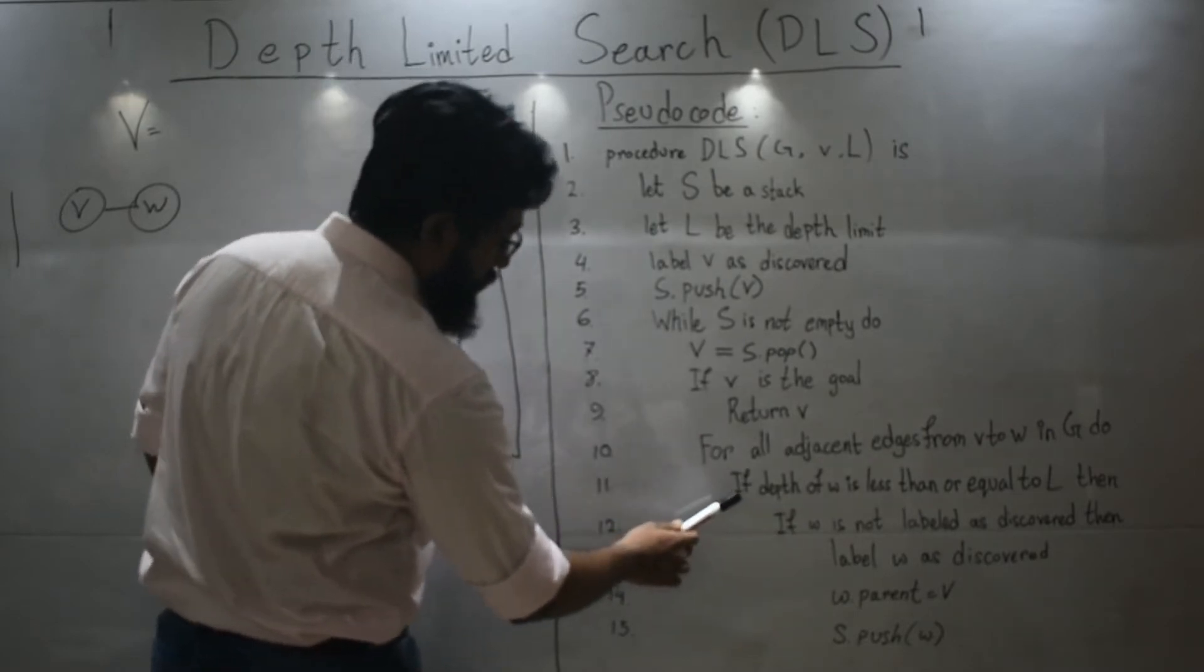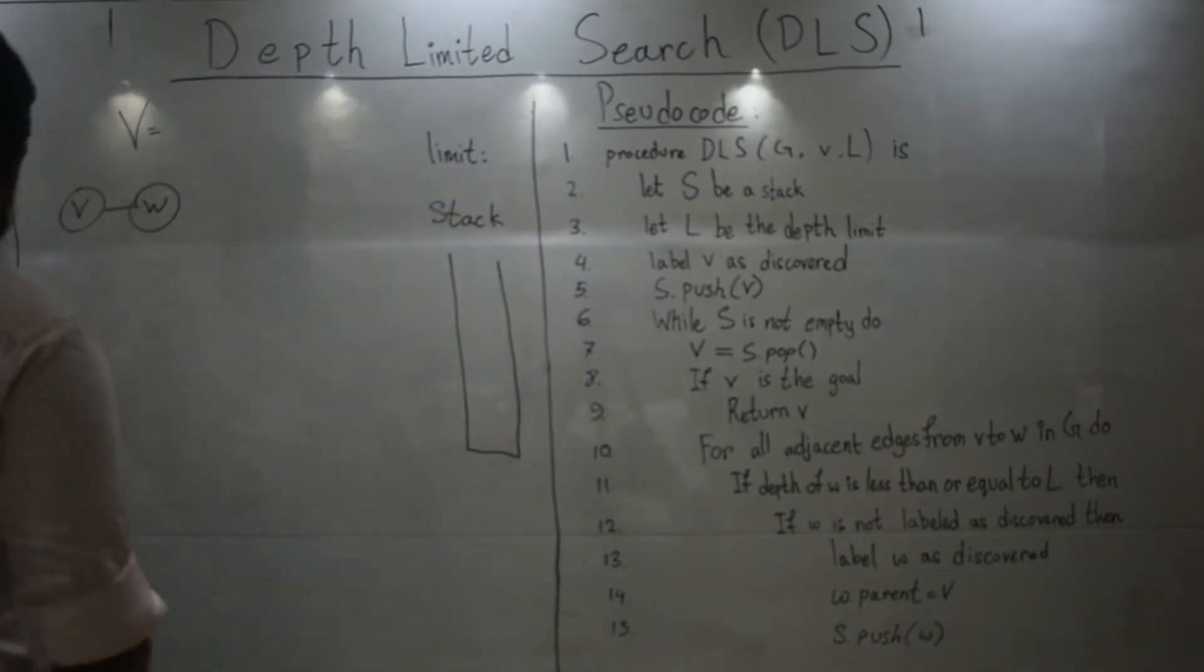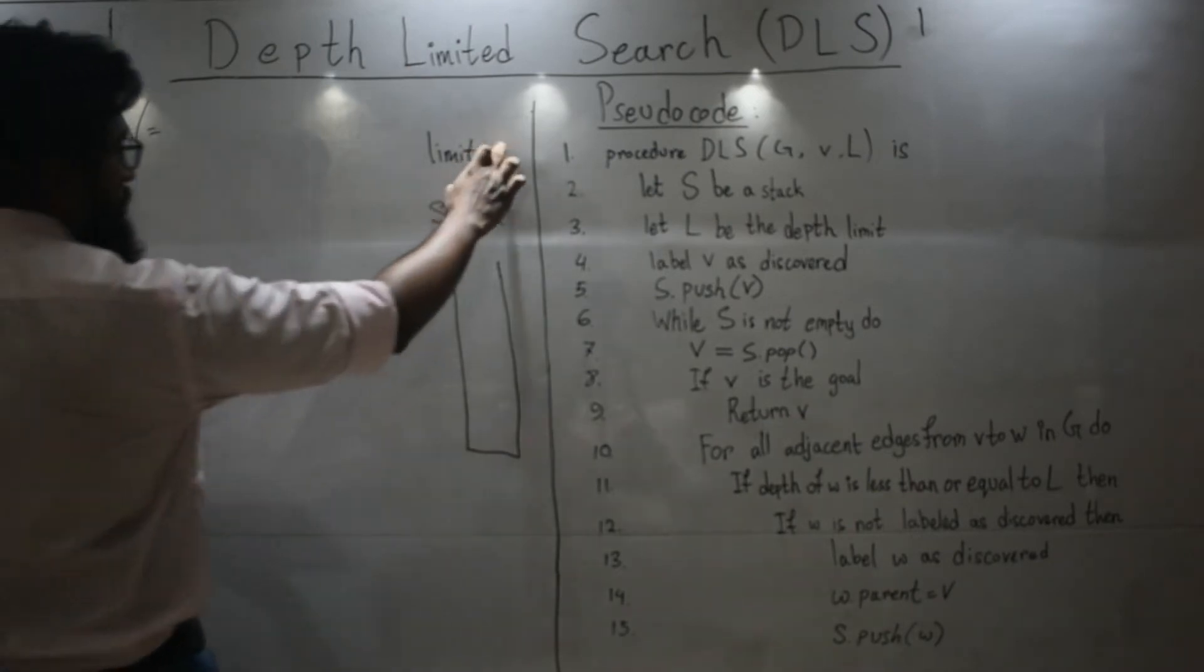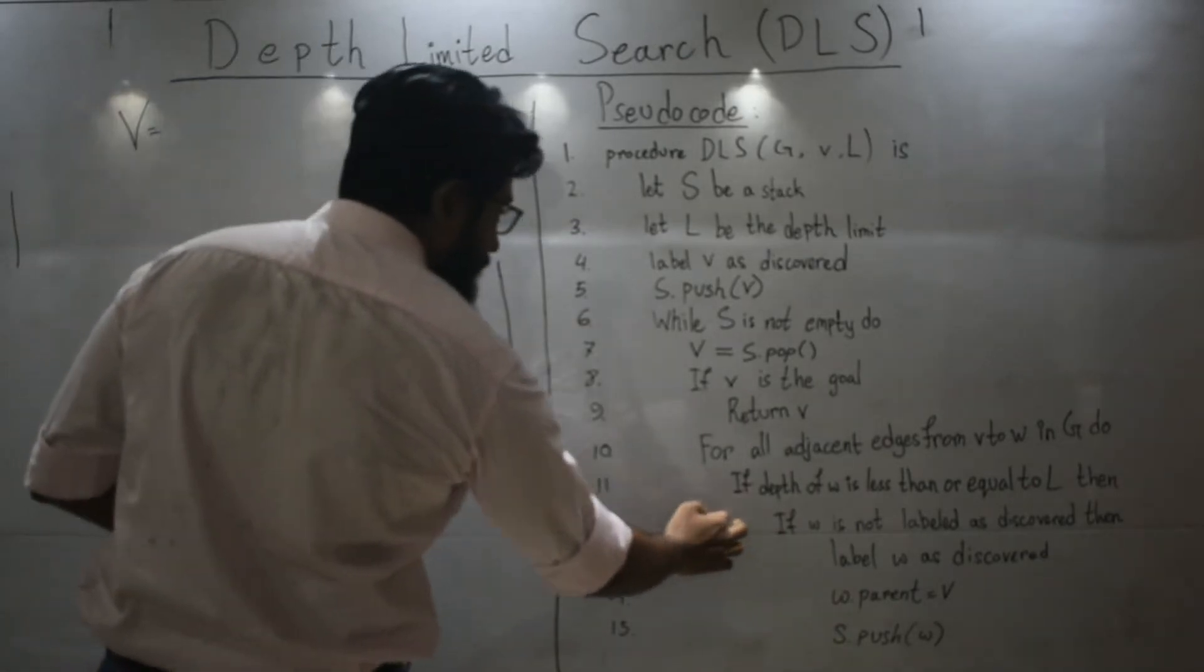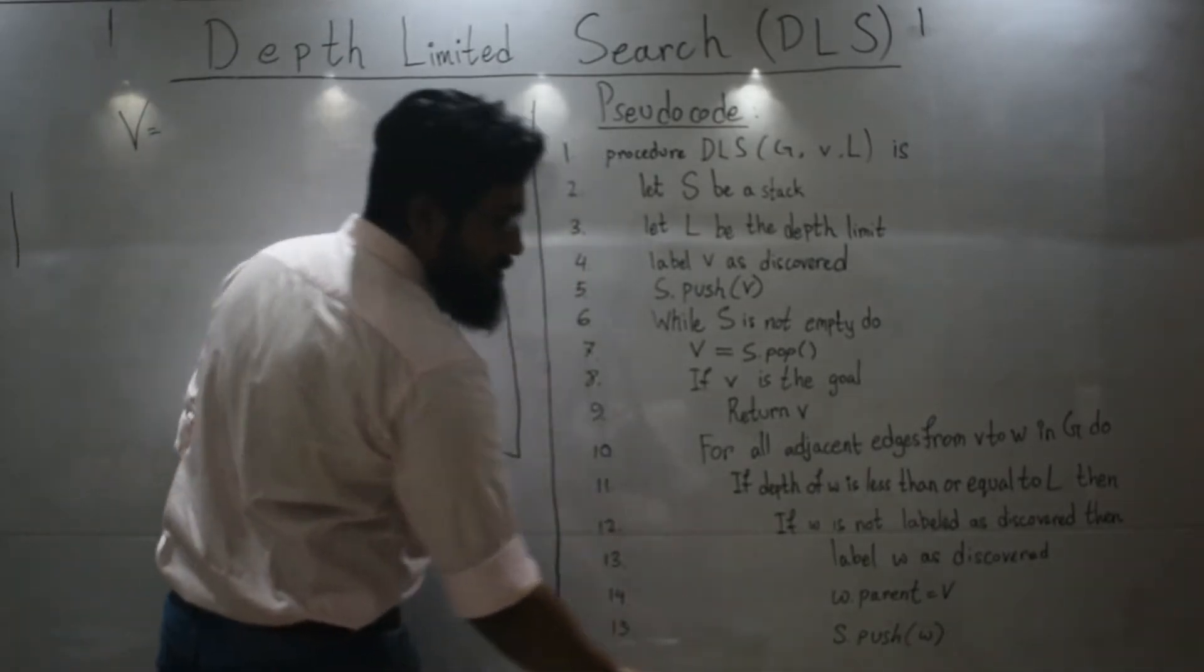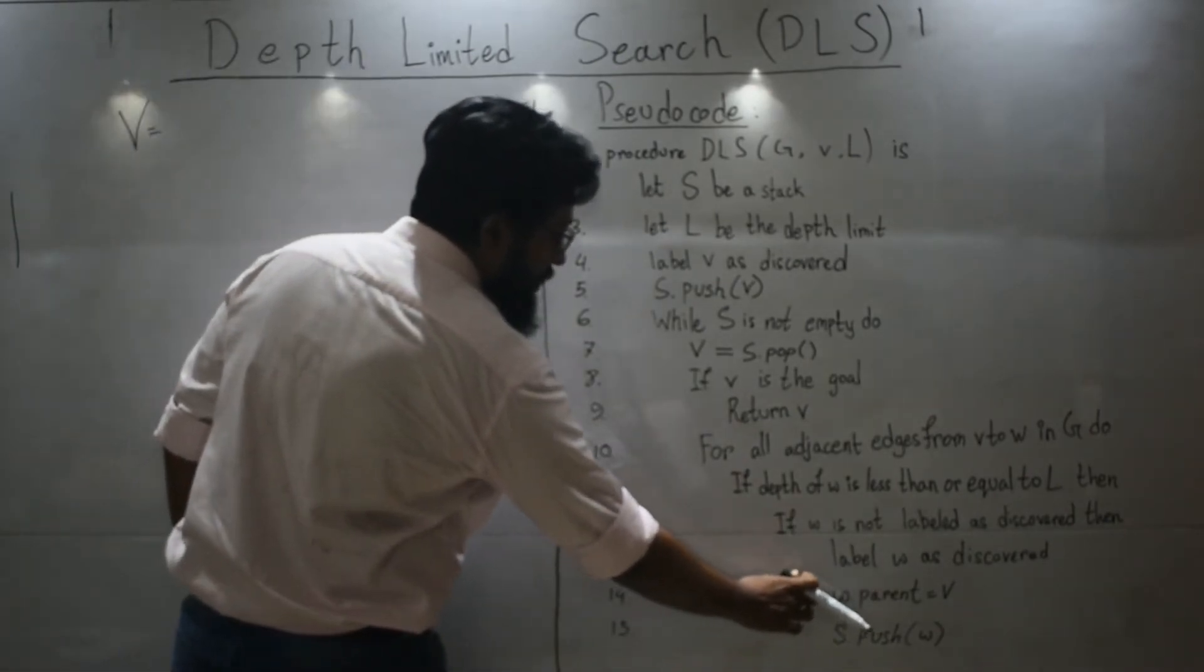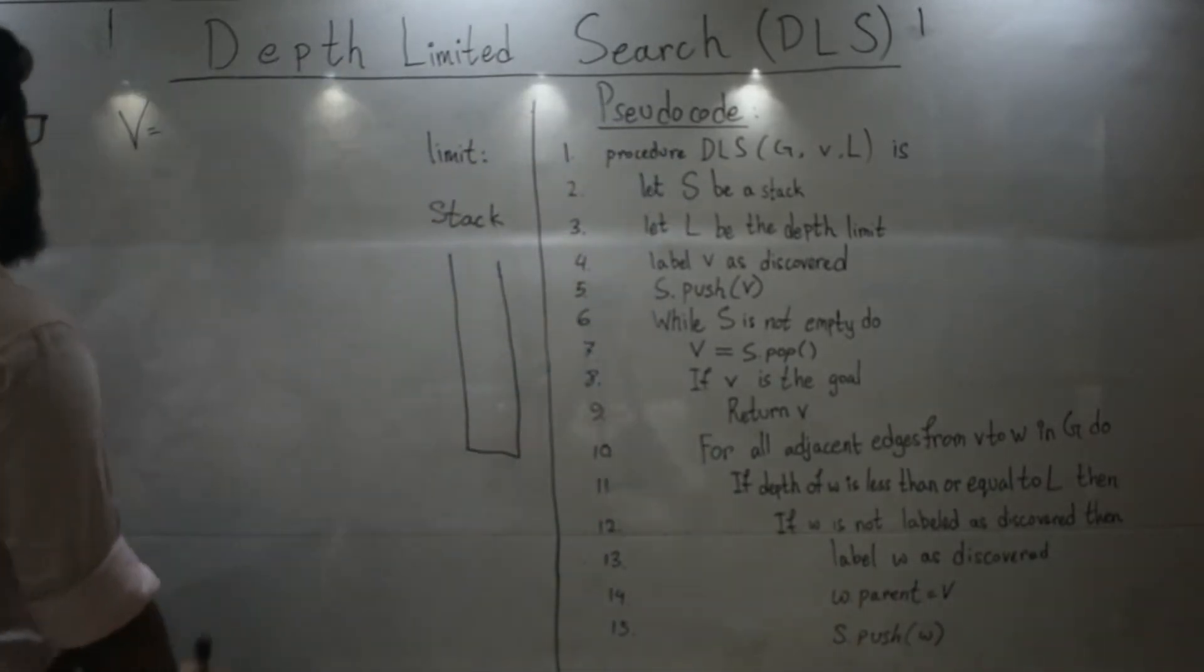So, let's check what we have to look for. Is the depth of W less than or equal to the limit? So, we will check the limit and check the level of W. Followed by, is it discovered or not? If these two criteria are fulfilled, then we will do these tasks. So, what are these tasks? We are going to label W, mark its parent as V, and push W.